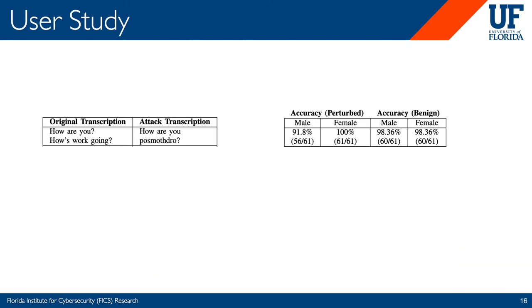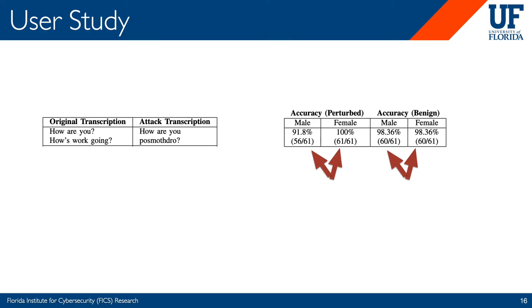To further understand the impact of the attack on audio quality, we conducted a user study where each participant was asked to listen to and transcribe perturbed audio samples. For example, one sample contained the command 'how are you, how's the work going' — a perturbed sample that caused the voice system to output the incorrect transcript 'how are you, post-mortoro.' Higher transcription accuracy from human listeners indicates higher audio quality. Our results showed that transcription accuracy for benign audio samples is around 98%, and for attack audio samples around 96%, demonstrating that human interpretability of attack audio is very similar to that of benign audio, effectively confirming the attack maintains audio quality while still fooling the model.